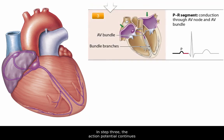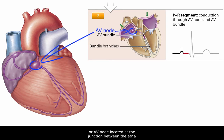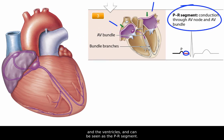In step three, the action potential continues to the pacemaker cells of the atrioventricular, or AV node, located at the junction between the atria and the ventricles, and can be seen as the PR segment. At this time, atrial contraction actually occurs.